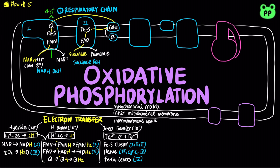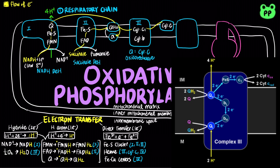Complex 3 is also known as ubiquinone cytochrome C oxidoreductase, which couples the transfer of electrons from ubiquinol to cytochrome C with the transport of protons from the mitochondrial matrix to the intermembrane space. The Q-cycle is a proposed mechanism that accommodates the switch between the two-electron carrier ubiquinol and the one-electron carriers, which are hemes of cytochrome B and cytochrome C1.